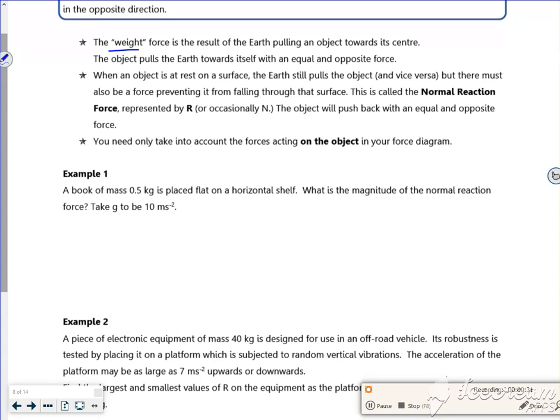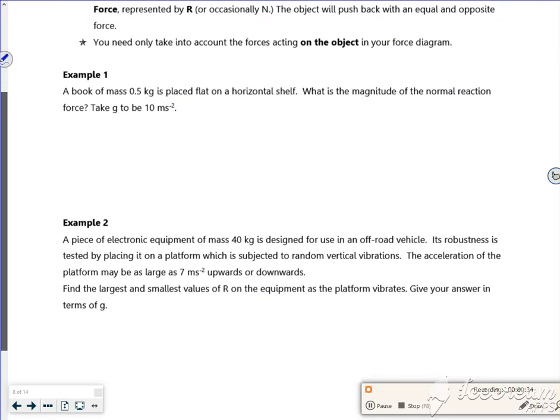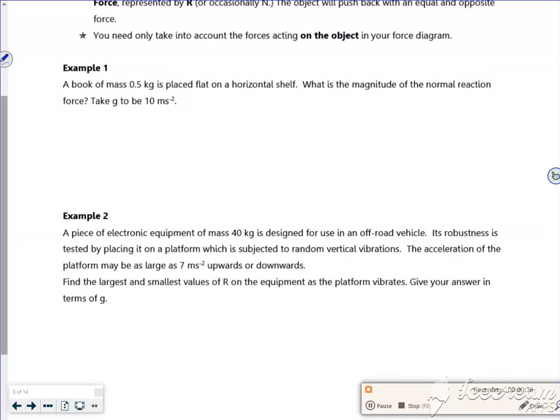What do you put for normal reactions instead? Right, then. It says a book of mass 0.5 kilos is placed on a flat horizontal shelf. So here's my book. It's exerting a force of 0.5g. It's not ploughing through the table. The table is pushing back, stopping it, and it's got R because of that.